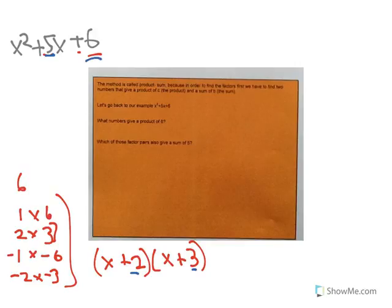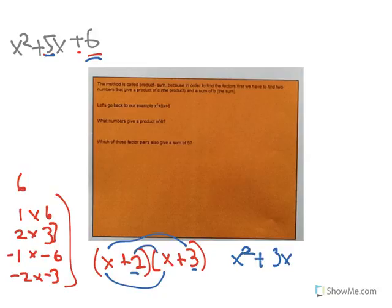If we multiply this out using the FOIL method: first gives x squared, outer gives plus 3x, inner gives plus 2x, last gives plus 6. When we combine like terms, we end up with x squared plus 5x plus 6. That's the reason why we're breaking it down — we can then find the roots.